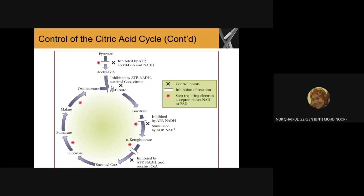For step number two, from isocitrate to alpha-ketoglutarate: isocitrate dehydrogenase catalyzes the first oxidative decarboxylation step of the TCA cycle. It has a two-step reaction: first, an oxidative reaction where isocitrate is oxidized to the intermediate oxalosuccinate, and NAD+ is reduced to NADH, which will later be used in the electron transport chain. When oxalosuccinate undergoes decarboxylation, it releases a carbon dioxide molecule and produces the five-carbon molecule alpha-ketoglutarate, which will enter step three.